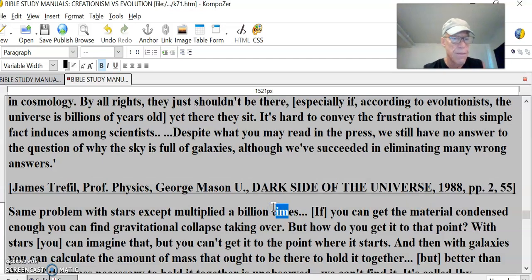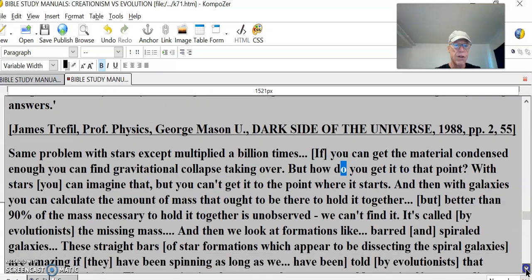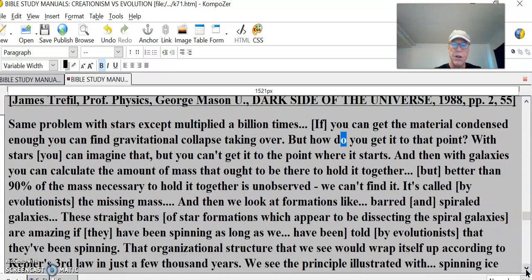James Trefil: Same problem with stars, except multiplied a billion times. If you can get the material condensed enough, you can find gravitational collapse taking over, but how do you get it to that point? With stars you can imagine that, but you can't get it to the point where it starts. And then with galaxies, you can calculate the amount of mass that ought to be there to hold it together, but better than 90% of the mass necessary to hold it together is unobserved. We can't find it. It's called by evolutionists the missing mass.